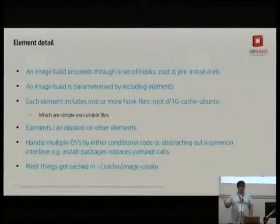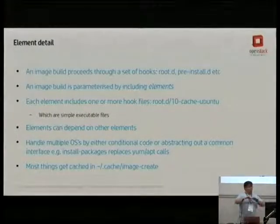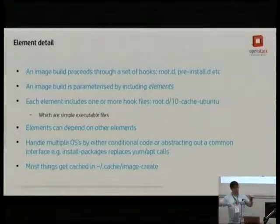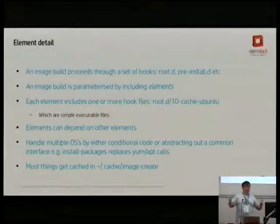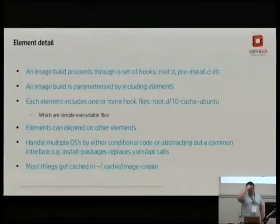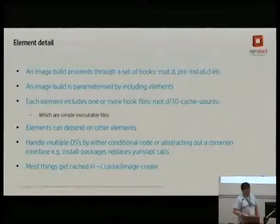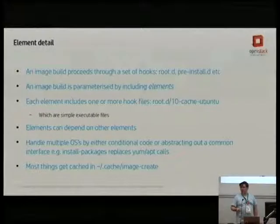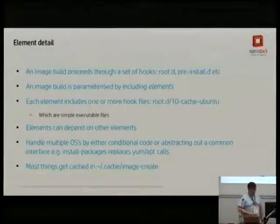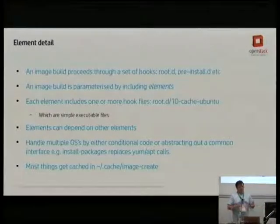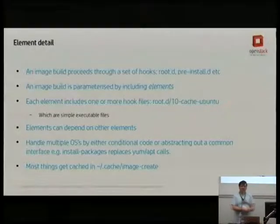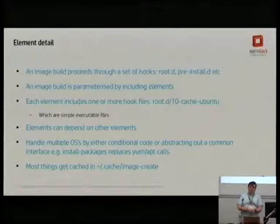The image build proceeds through hooks: root.d, preinstall.d, install.d, et cetera. Each hook is run across all elements at once, then we move to the next hook — for all elements we run their preinstall code, then install code. You can do cross-element configuration by injecting data in an earlier phase or lower-numbered script. Within each hook directory, files are simple executables — sysadmin-friendly and easy to reason about. Multiple OSes don't have the same interfaces, so we've abstracted that out: we have a little wrapper called install-packages that works for both dpackage and RPM-based systems.